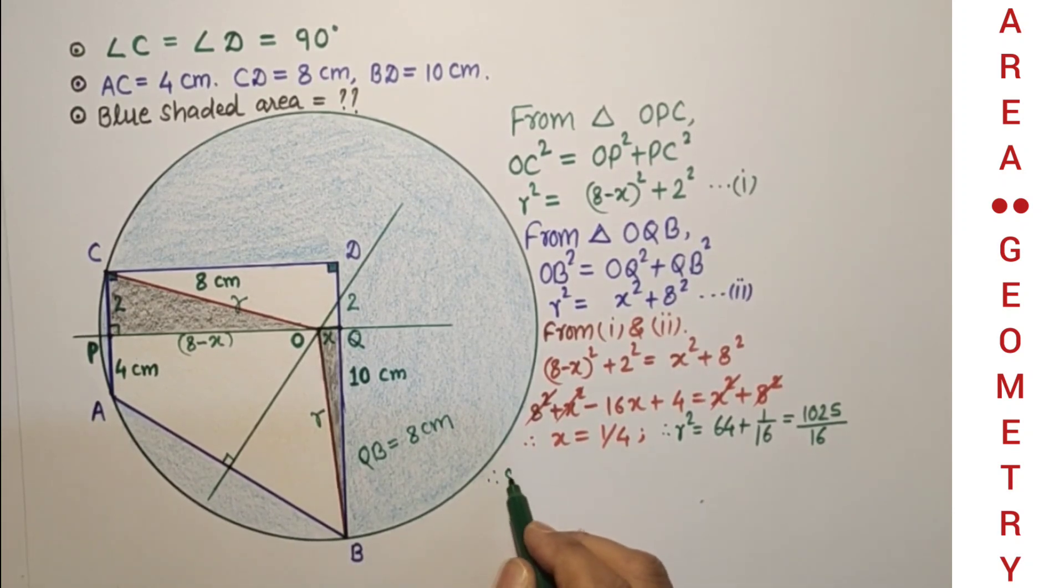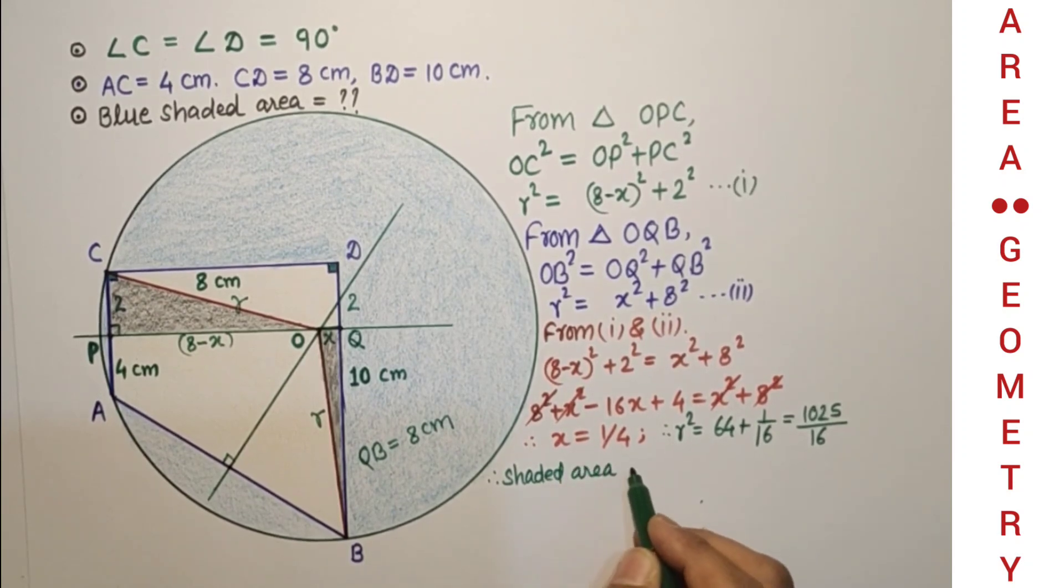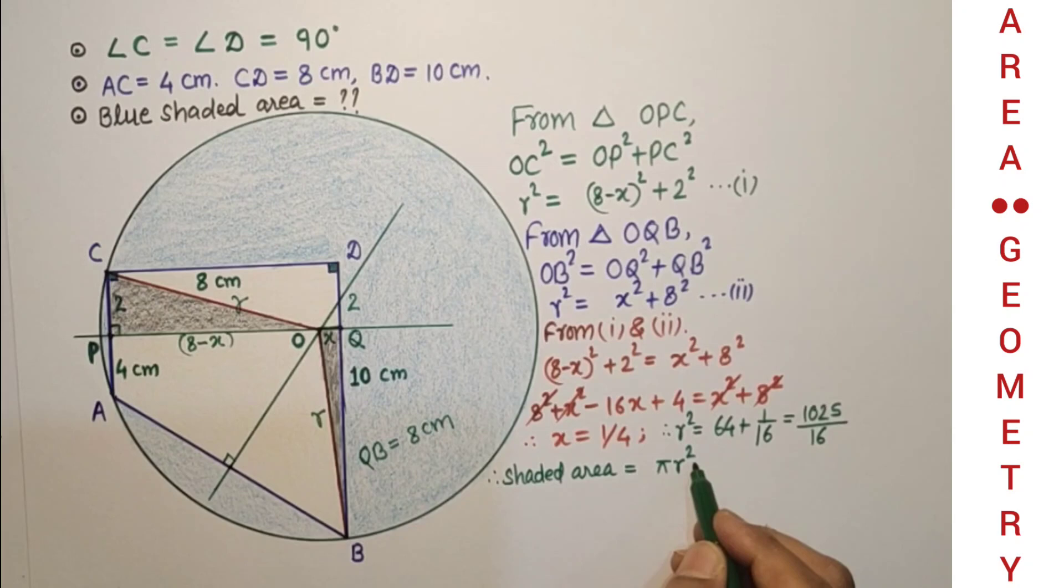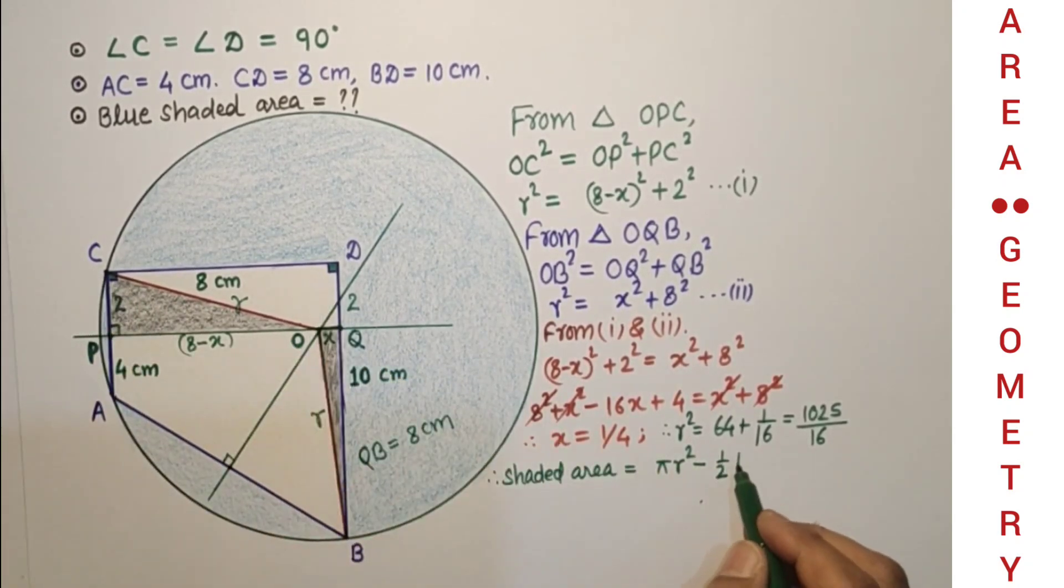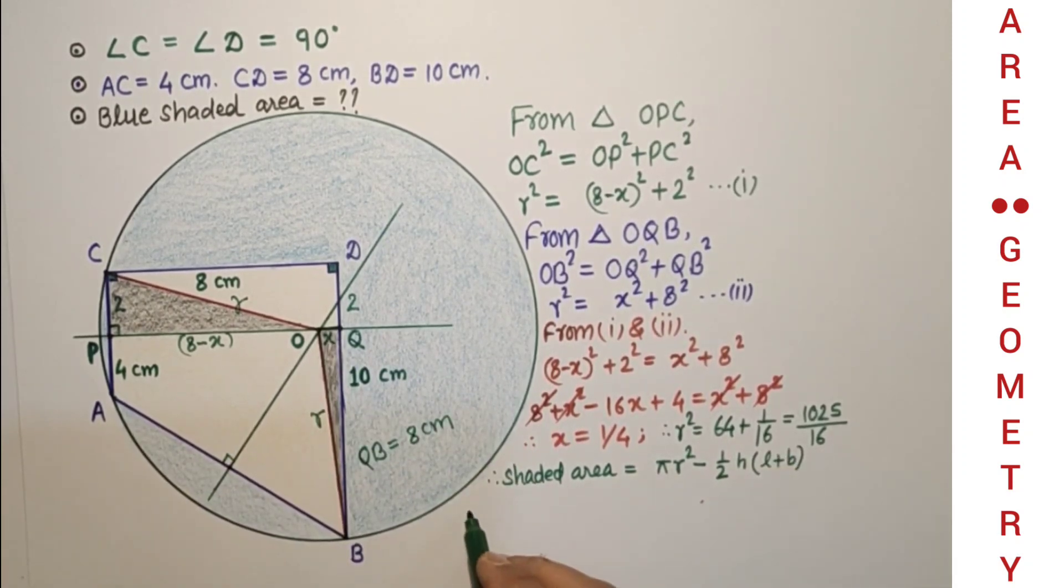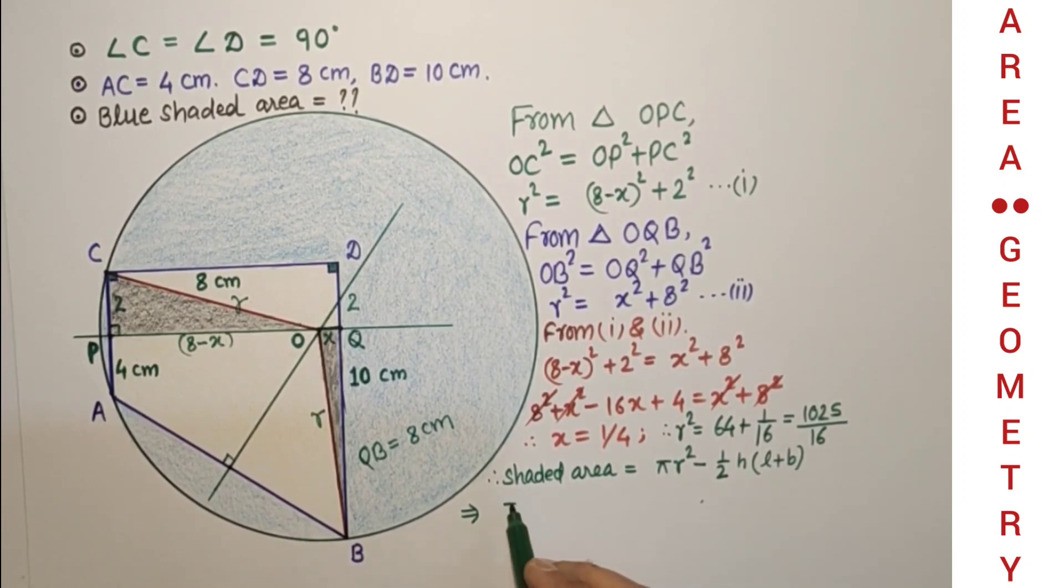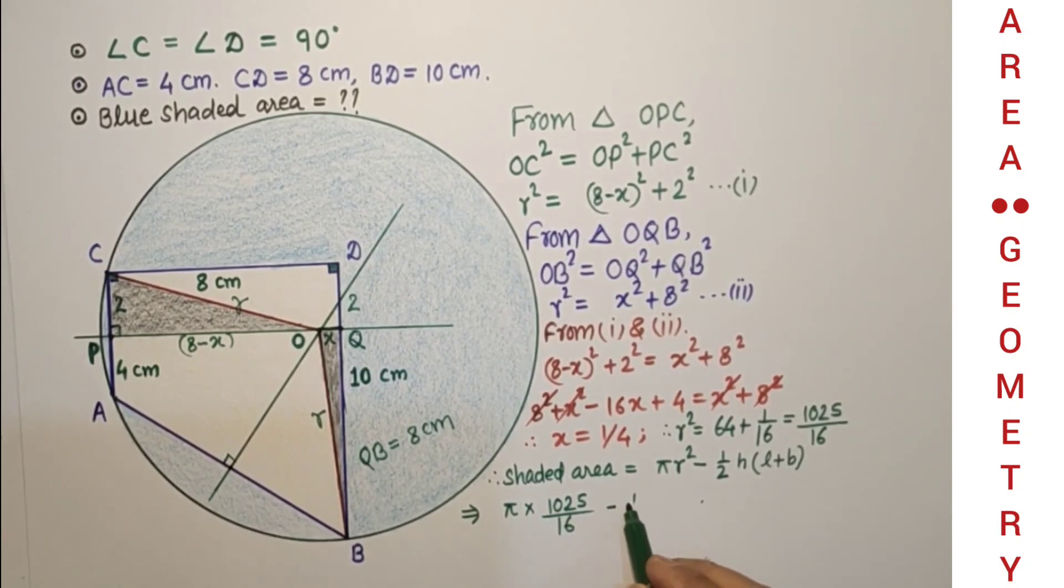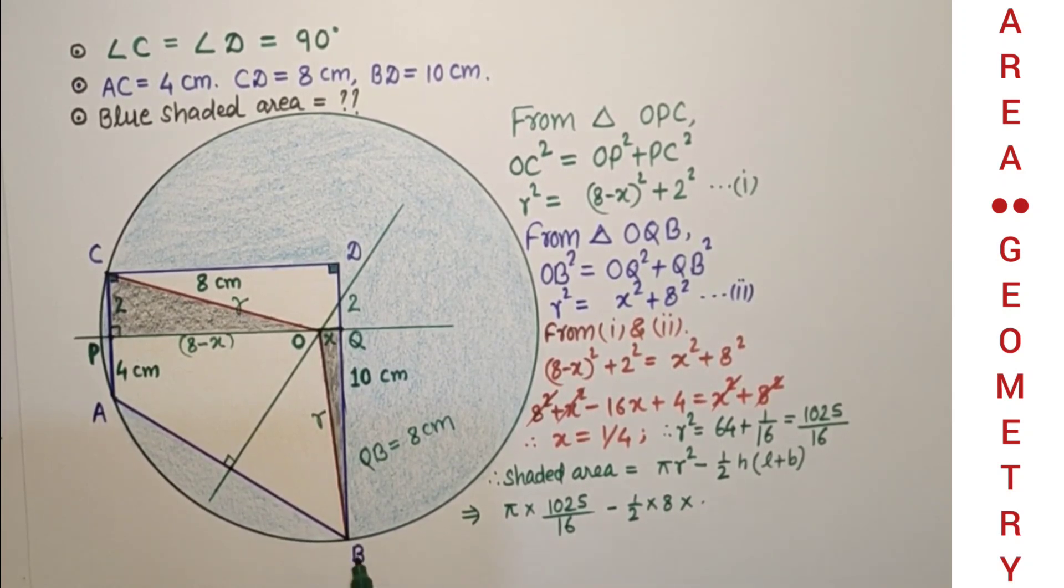Required shaded area, that blue shaded area, is equal to πR² minus half H times sum of parallel sides. That is equal to πR² minus half, 1025/16, this is R², minus half, H is 8, sum of parallel sides means BD plus AC which is 10 plus 4, 14.